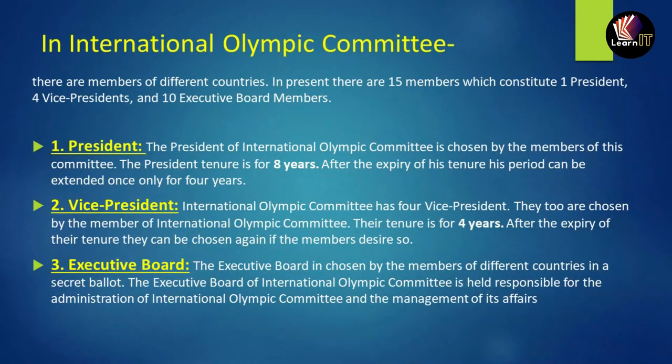Now we will talk about the International Olympic Committee in detail. Members of different countries are present in the International Olympic Committee. At present there are approximately 15 members, which constitute one president, four vice presidents, and ten executive board members.